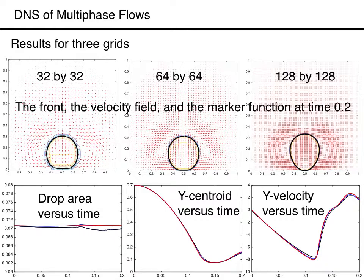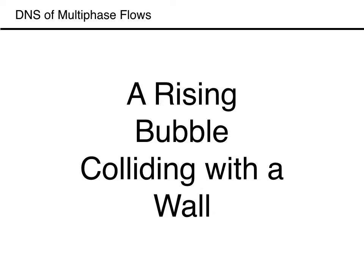The three plots at the bottom show the area of the drop, the distance of the drop's centroid from the bottom wall, and the centroid velocity versus time for all three runs. The black line is for the lowest resolution and the red line is for the finest one. On the coarsest grid the drop loses a little bit of mass, particularly when it first collides with the wall, but overall the results agree well, particularly for the two finest grids.